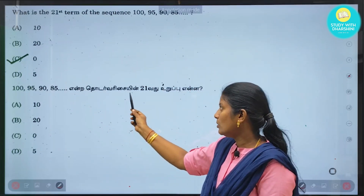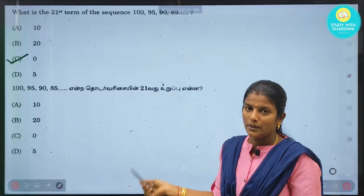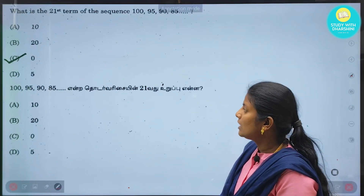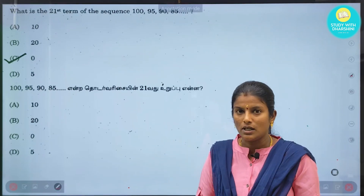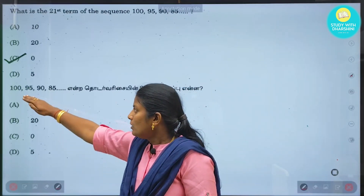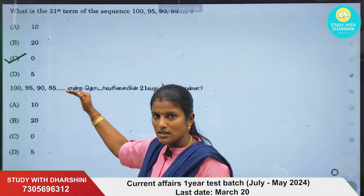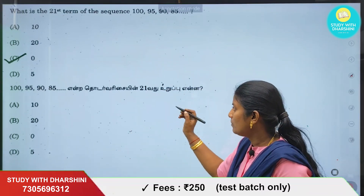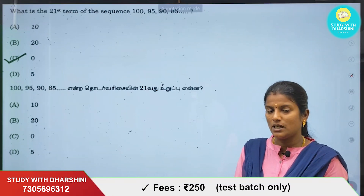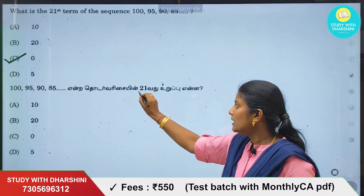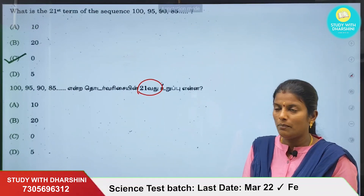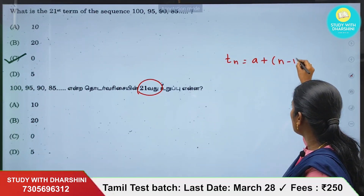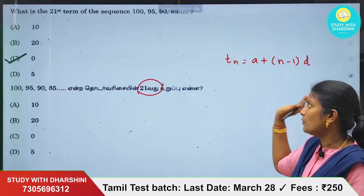Let's talk about AP and TNP previous year questions. We will look at how to solve for the first term and common difference, and use the TNP formula: Tn = a + (n-1)d. Here, A is the first term.